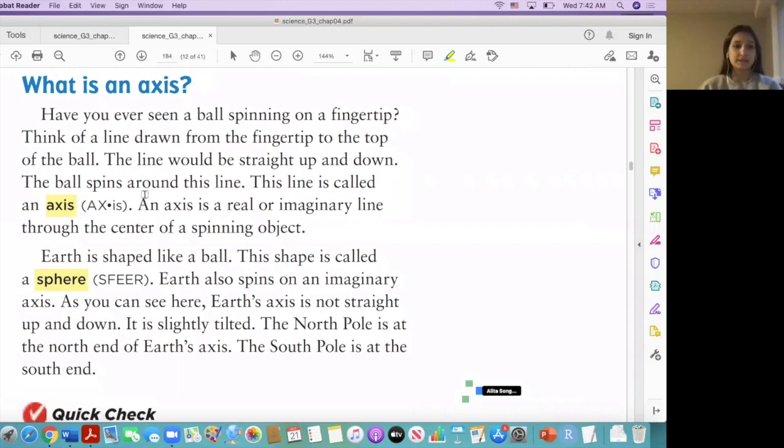So what is an axis? Have you ever seen a ball spinning on a fingertip? Think of a line drawn from the fingertip to the top of the ball. The line would be straight up and down. The ball spinning around this line is called an axis. An axis is a real or imaginary line through the center of a spinning object.